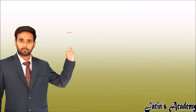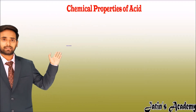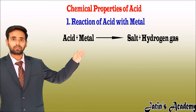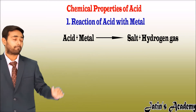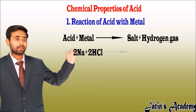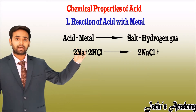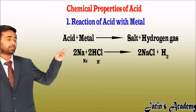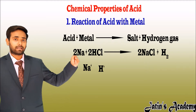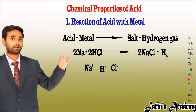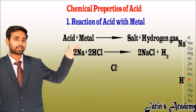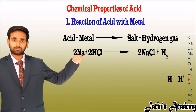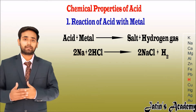Coming to the chemical properties of acid, the first property is reaction with metal. When acid reacts with metal, it gives metallic salt and hydrogen gas. For example, when sodium reacts with HCl, it gives NaCl (sodium chloride) and hydrogen gas. This is also called a displacement reaction because there are two positive ions — Na⁺ and H⁺ — and one negative ion. Comparing these in the reactivity series, Na is more reactive, so Na takes the negative ion and becomes NaCl, while two hydrogen atoms become H₂ gas.